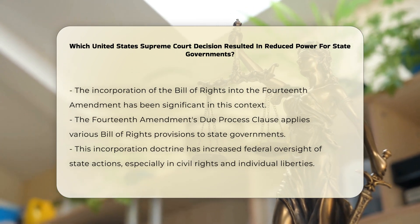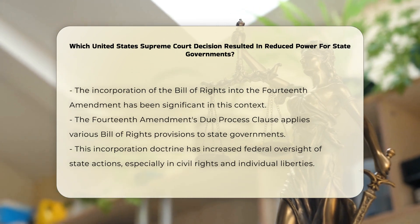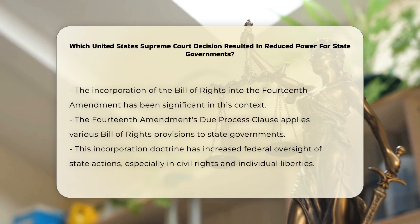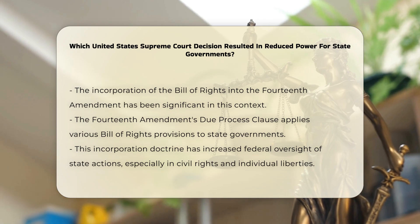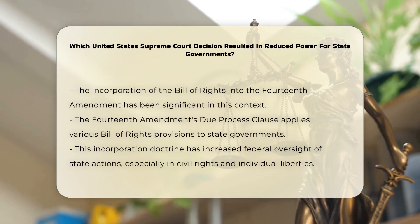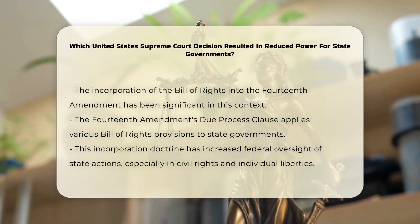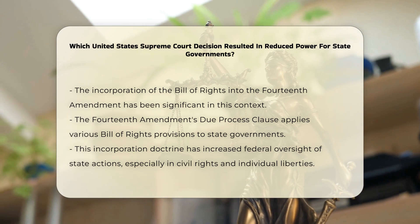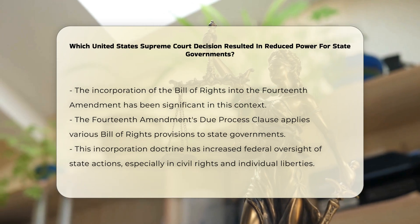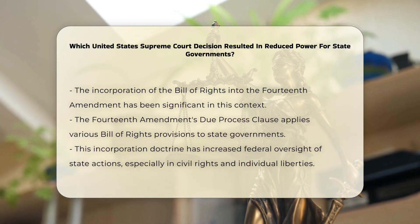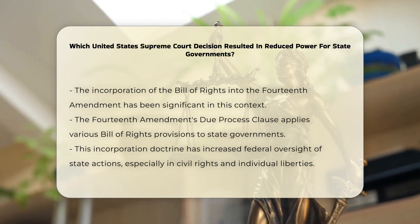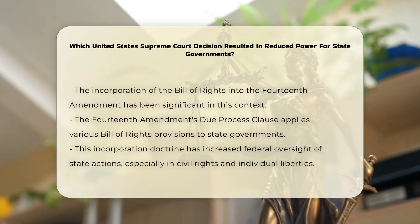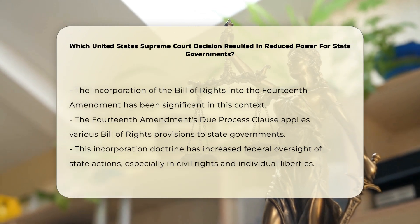For instance, the Fourteenth Amendment's Due Process Clause has been interpreted to apply various Bill of Rights provisions to state governments. This incorporation doctrine has expanded federal oversight over state actions, particularly in areas such as civil rights and individual liberties.